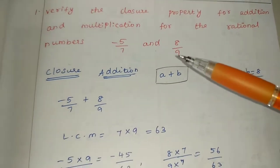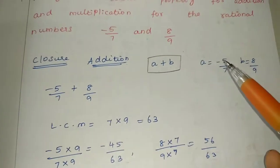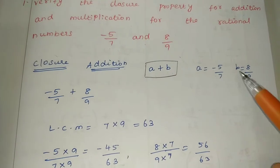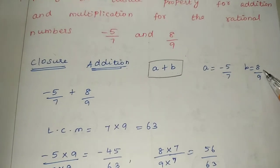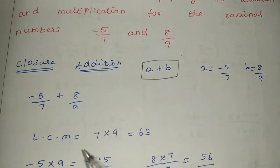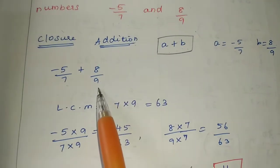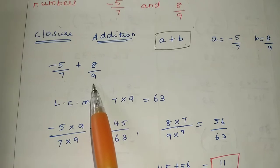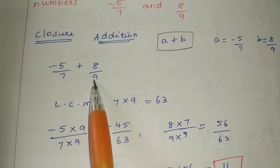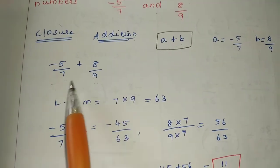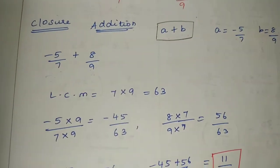For the first addition under closure property: A plus B means minus 5 by 7 plus 8 by 9. We need to find the LCM of 7 and 9. LCM of 7 and 9 is 63.